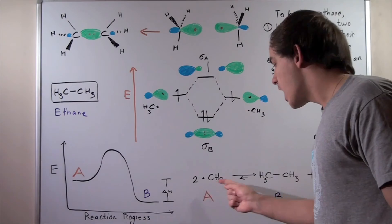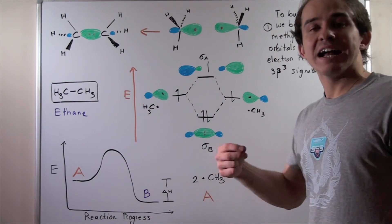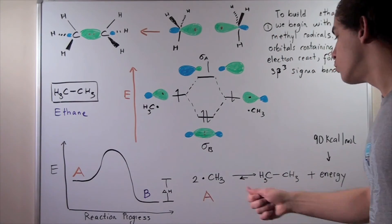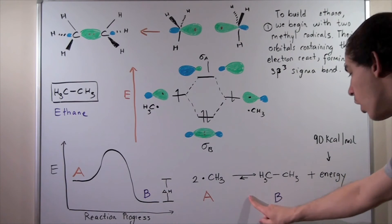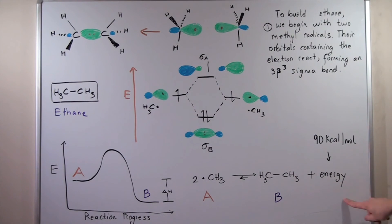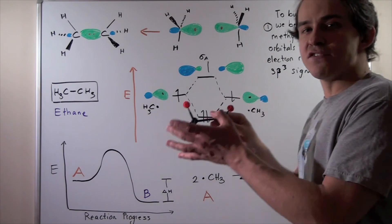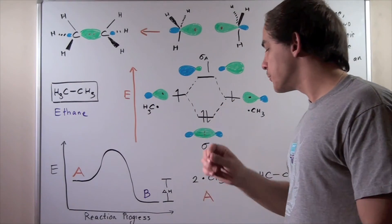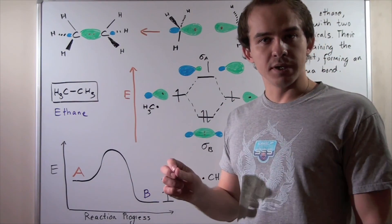And it's actually 90 kilocals per mole. In other words, if we have one mole of methyl radical, react with one mole of methyl radical, we form one mole of ethane, and we release energy. So we release 90 kilocals of energy. So this is a favorable reaction in terms of our change in enthalpy.